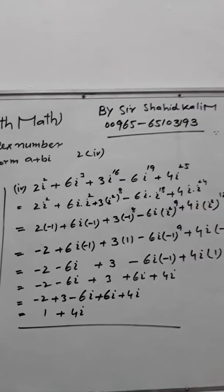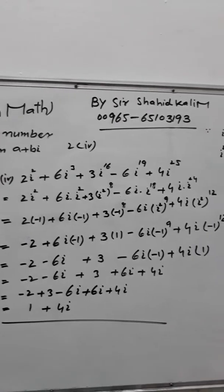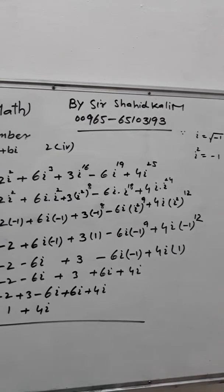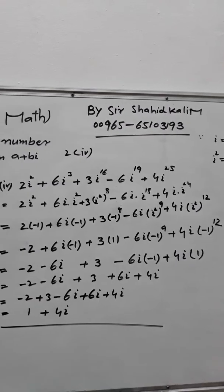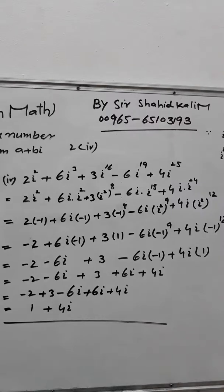Check please, inshallah I will explain question number 2, fourth part now. We are given 2i² + 6i³ + 3i^16 - 6i^18 + 4i^24.